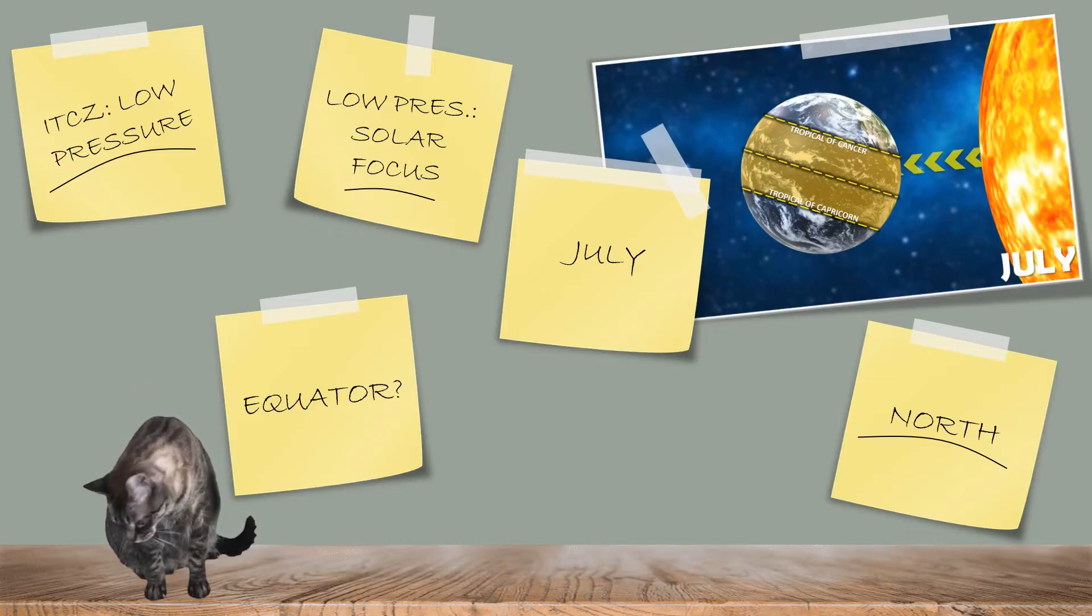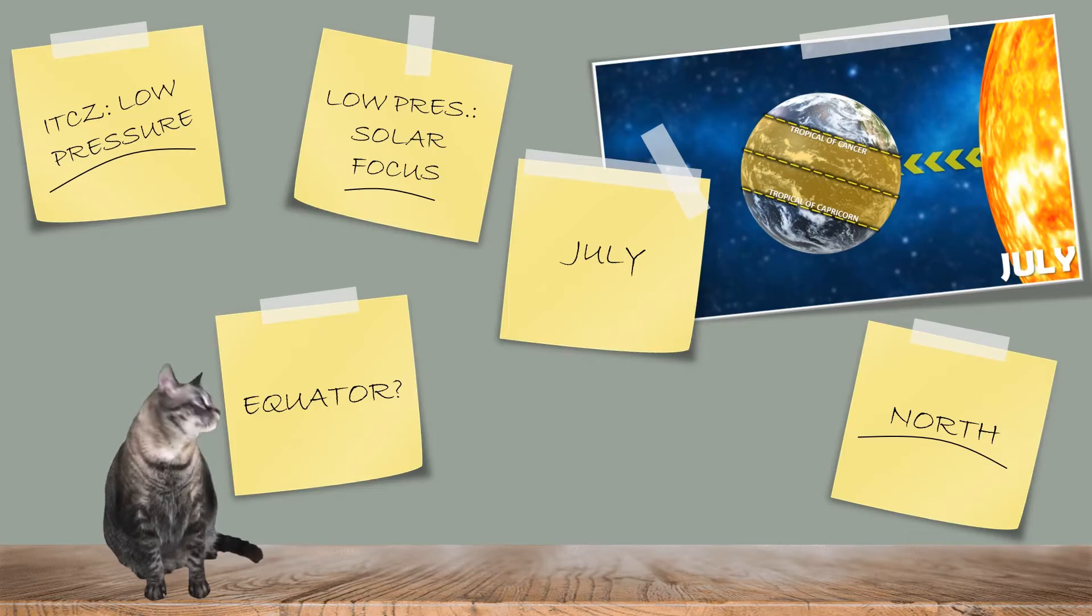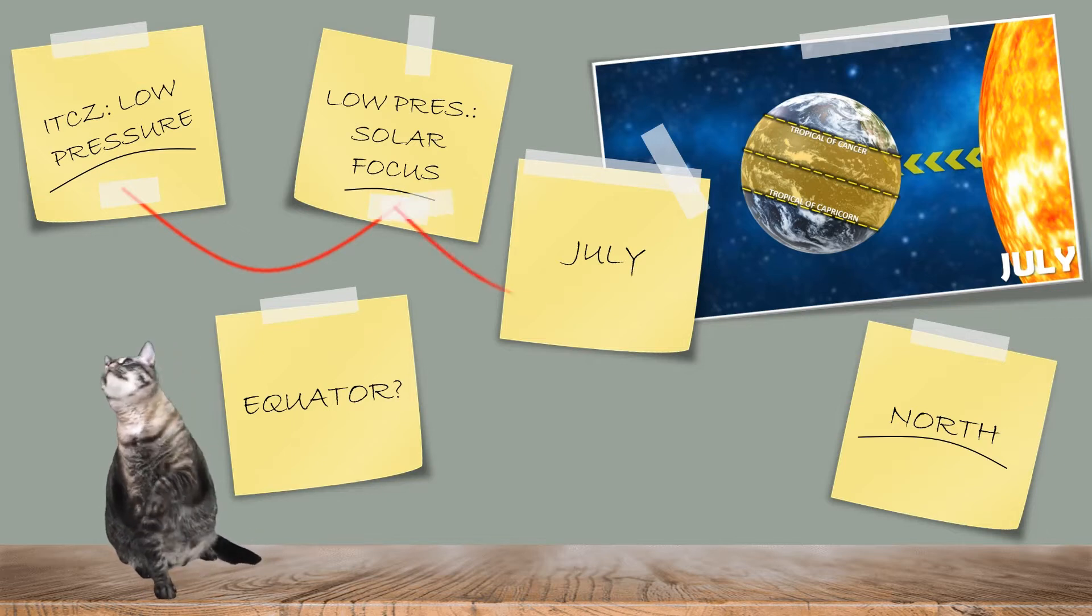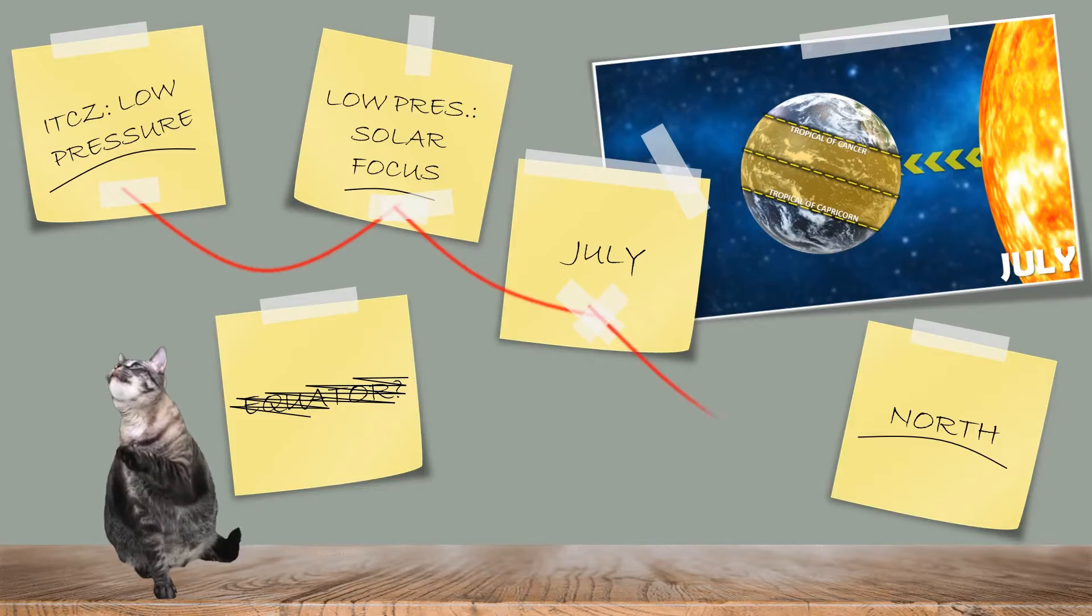Now, if the Intertropical Convergence Zone is the area of low pressure, and low pressure is created due to the concentration of sunlight, then in July, the ITCZ isn't going to be along the equator. No, it'll be in the north, promoting high rainfall.